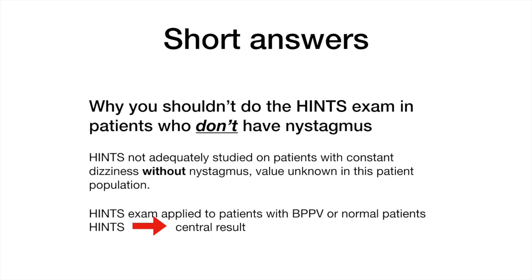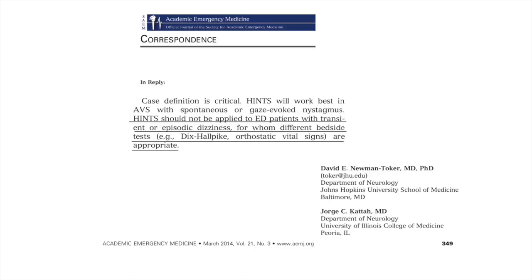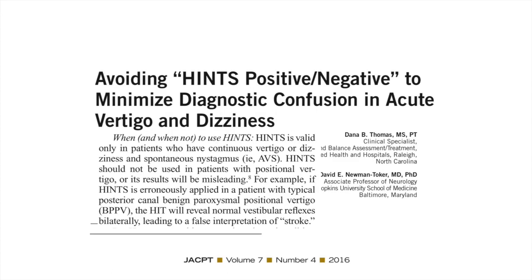What about doing HINTS on patients with likely BPPV, just to be sure? Quotes from the papers I've referenced, where David Newman-Toker and Kattah were both in agreement, confirm you shouldn't do HINTS on patients with probable BPPV. The physiotherapy journal letter outlines why: because patients with BPPV have a normal head impulse test, which would make you think your patient with BPPV is having a stroke if you applied the HINTS exam to them.